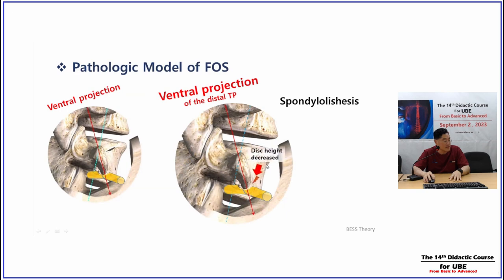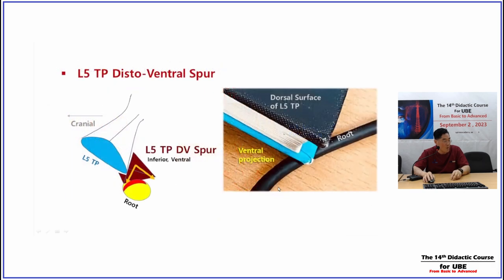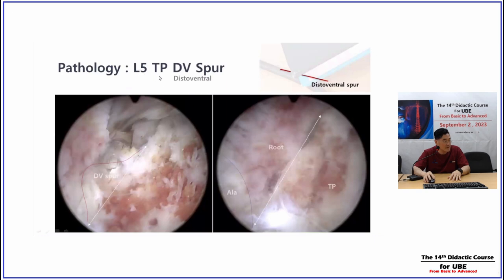Why does this happen? Because of the lumbosacral angle, the TP is angled ventrally — the distal portion is angulated ventrally — so the distal TP ventral portion can touch and squeeze the nerve root at the TP-ala junction when disc height collapses, with disc extrusion and ventral slip. The nerve root can then be impinged in this area. We call this the distal TP, because the tall area is not the pathology — only the distal or ventral area. We call it the L5 transverse process distal ventral, or L5TP DV spur.